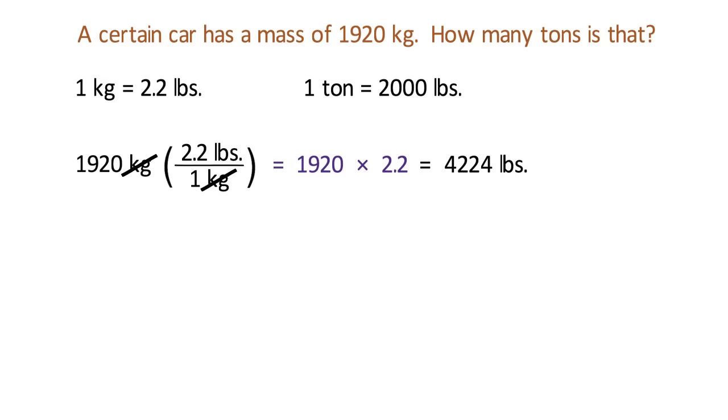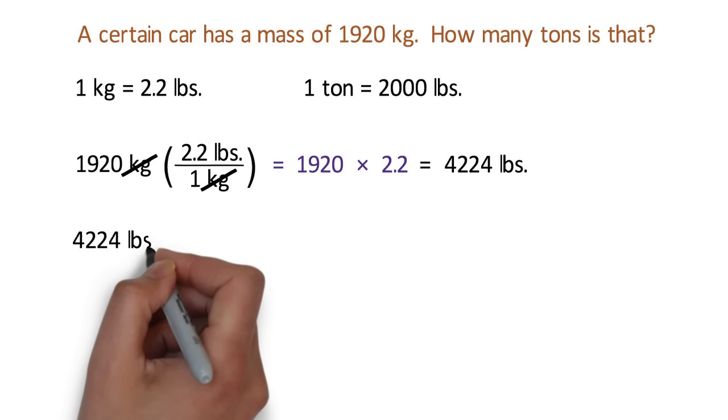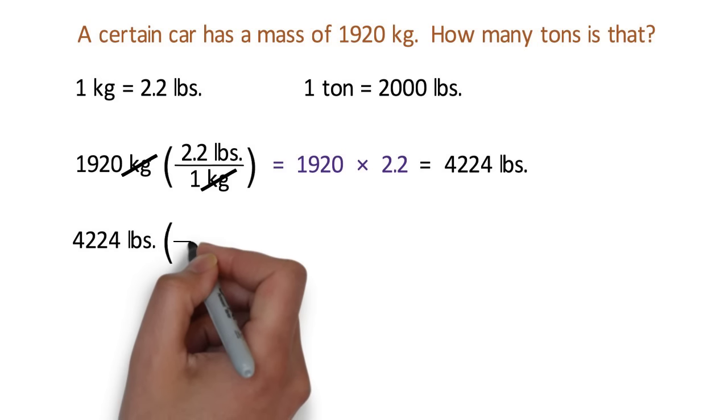But we're not done yet. We still need to convert the pounds to tons. The second step works exactly the same way. First, we write down the number that we want to convert, that is, 4,224 pounds, and then we multiply this by a fraction.